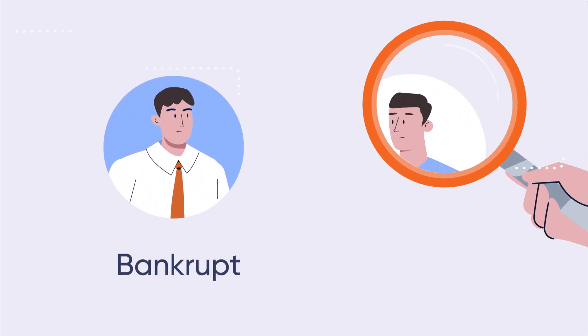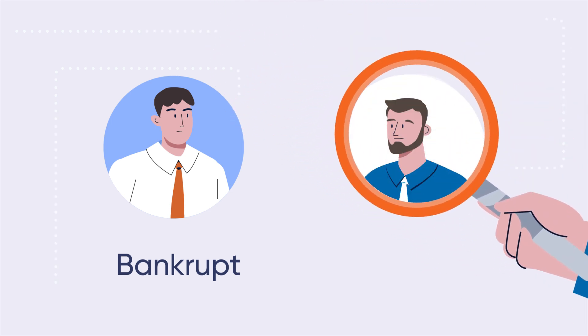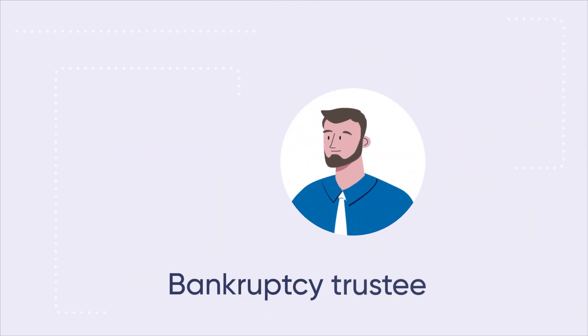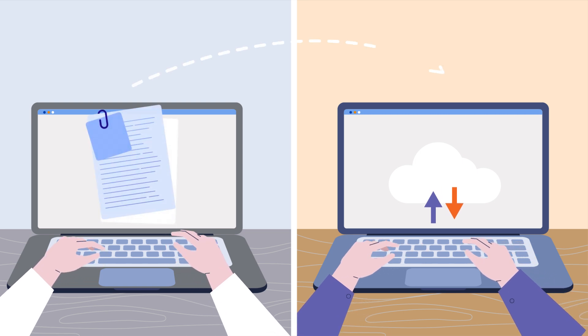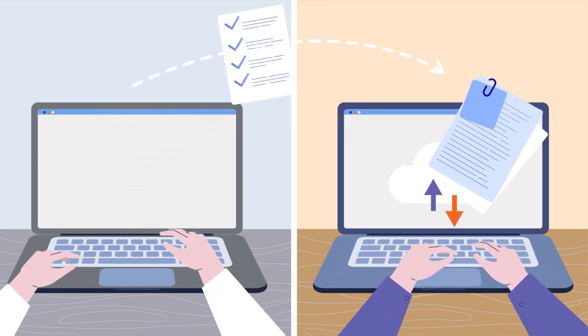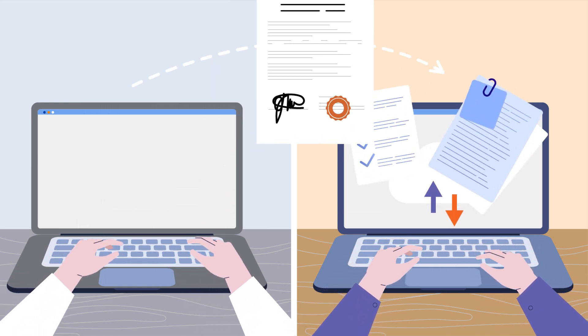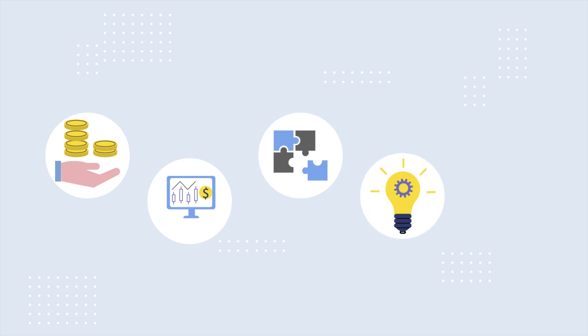When an individual becomes bankrupt, a bankruptcy trustee is appointed to manage the bankrupt estate. When becoming bankrupt, the bankrupt has an obligation to complete a bankruptcy form and to assist the bankruptcy trustee by providing information that is requested. The bankruptcy form provides the bankruptcy trustee with information regarding details of the individual's debts, income, and assets.